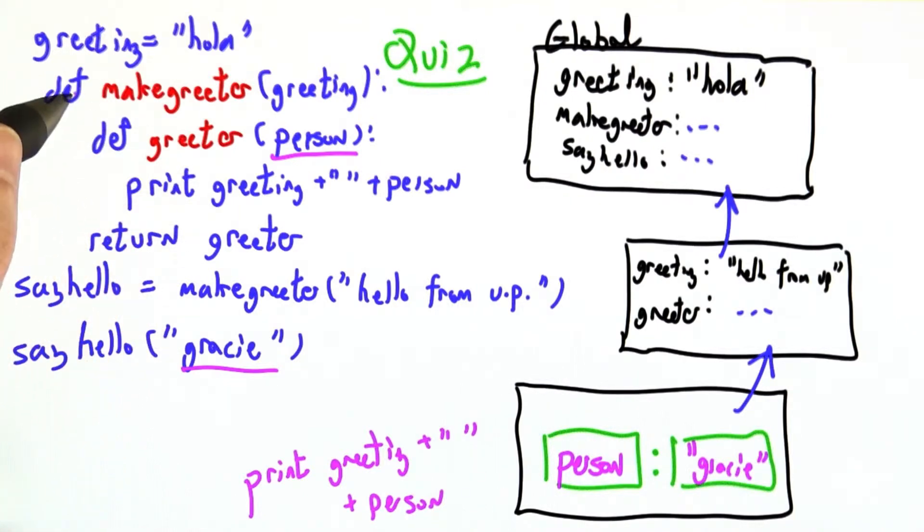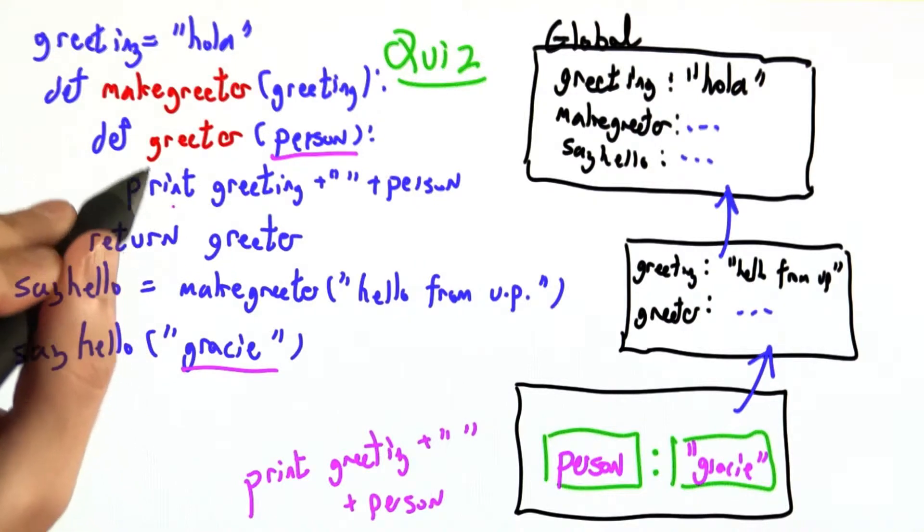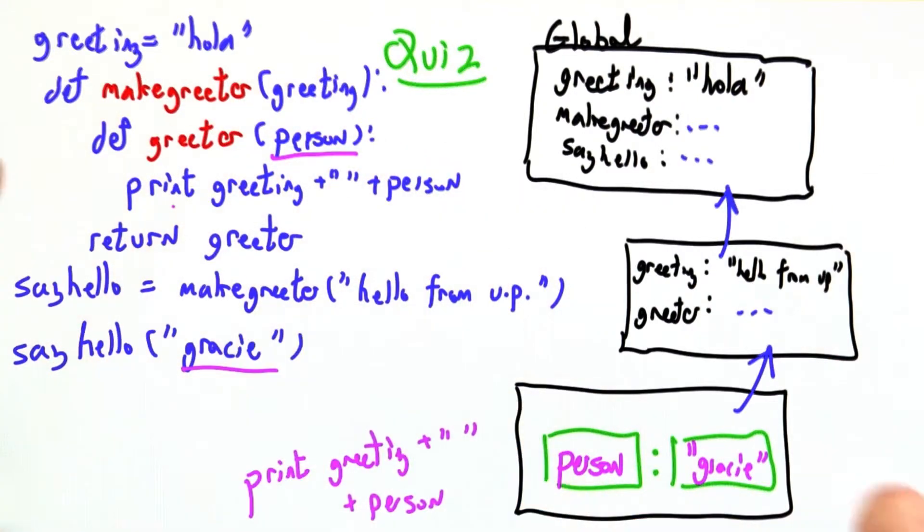This quiz was pretty tricky. This notion of nested procedures does not come up very often in Python. But if we want a complete interpreter, one that understands all the nuances of a language, then we have to handle this.